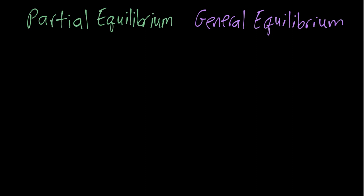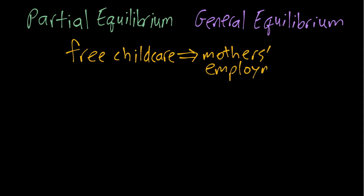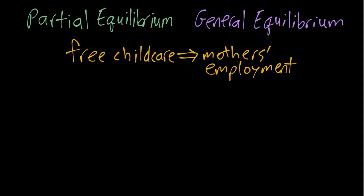To make things concrete, imagine we're interested in a policy that would provide free public childcare and we're interested in the causal effect of the policy on employment, in particular of the children's mothers. So in the partial equilibrium analysis, what we would do is consider how mothers would respond in terms of their choice to try to find a job or not, if we just consider that basically all the prices in different markets are fixed.